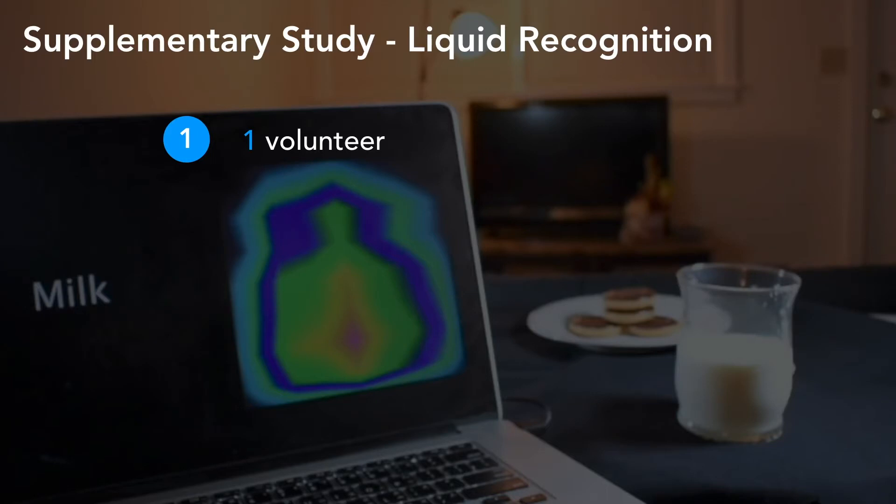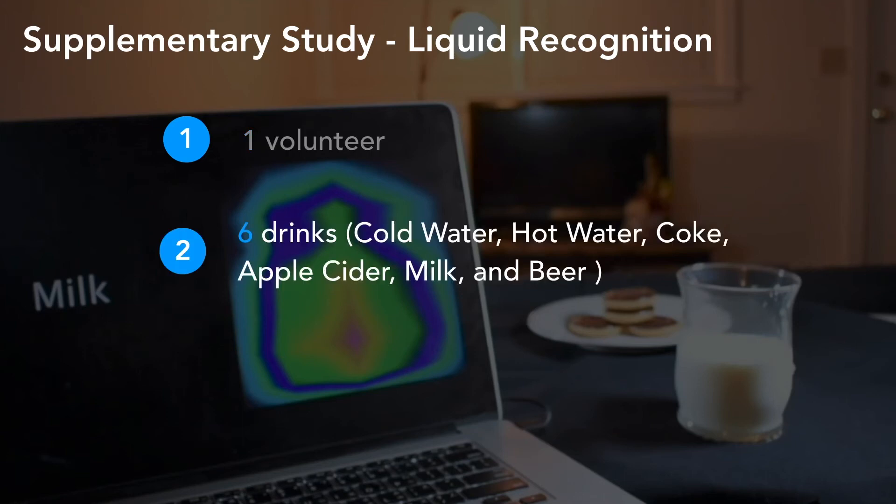In addition, we also evaluate how well the system can recognize different types of liquids. For this evaluation, we recruit a volunteer and ask her to test six types of liquids, including cold water, hot water, coke, apple cider, milk, and beer.